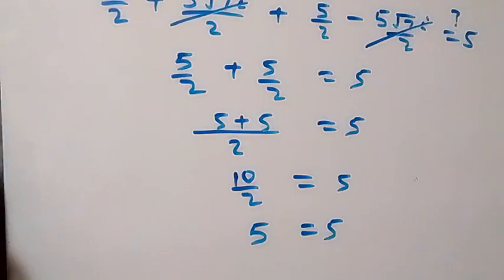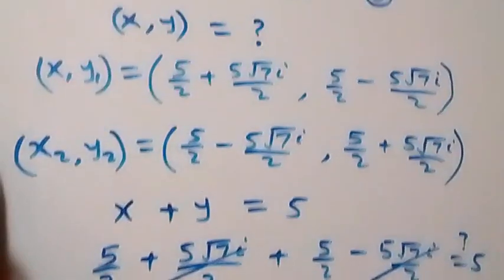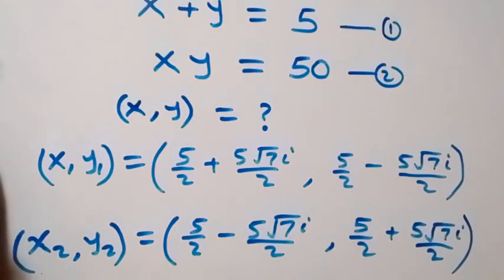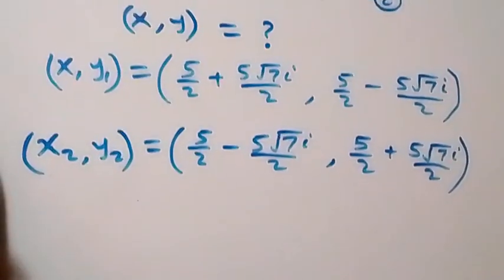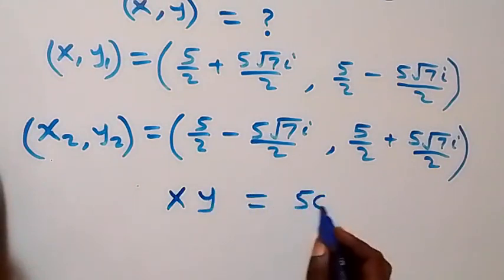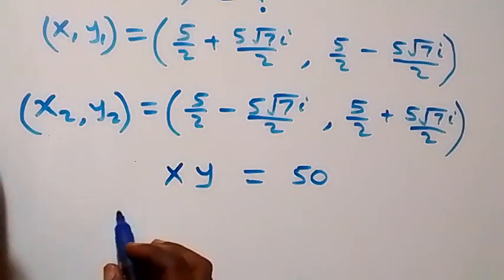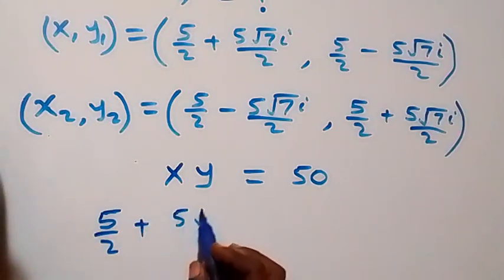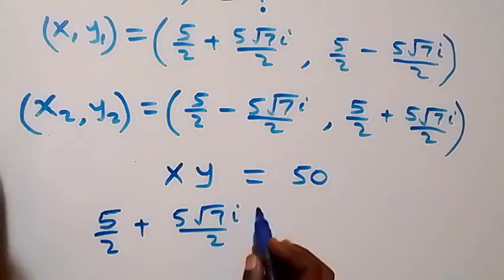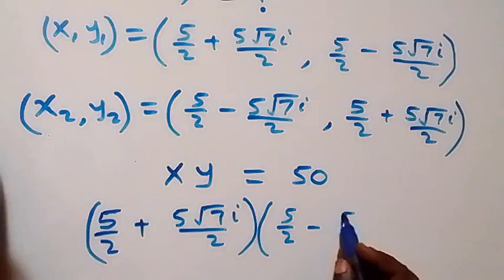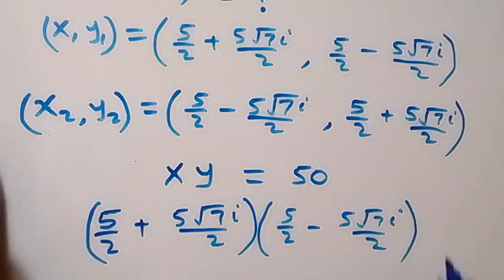From equation two: x times y equals 50. Let's verify that x times y equals (five over two plus five root seven i over two) times (five over two minus five root seven i over two). This is in the form (a + b)(a − b) equals a squared minus b squared.